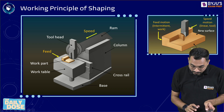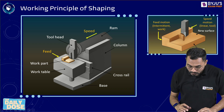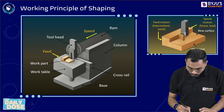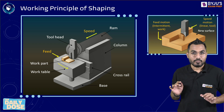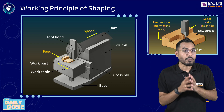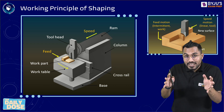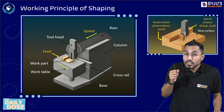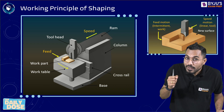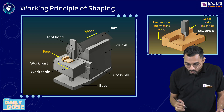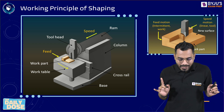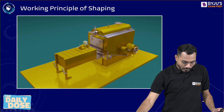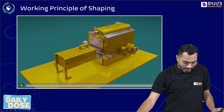Once the cutting operation is completed, a feed has to be given. The feed is given to the work table. After every stroke, the work table feeds in the lateral direction. So, reciprocating motion is given to the tool, and feed motion is given to the work table.